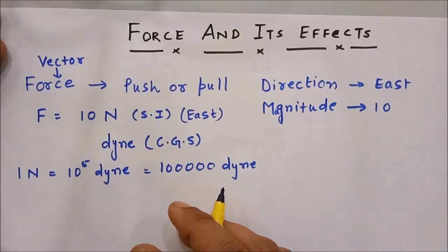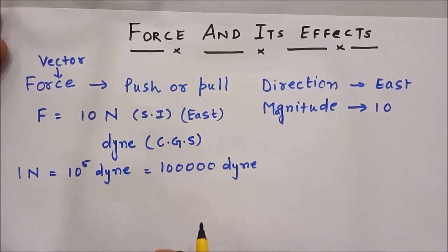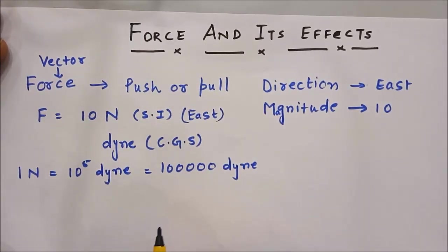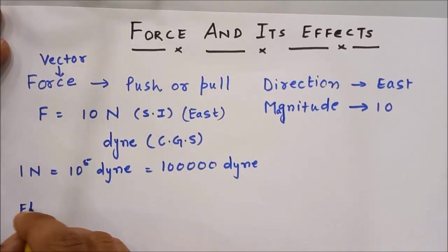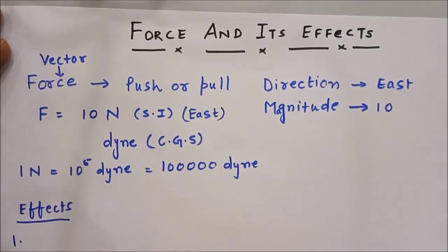Now let us understand about the effects of forces on a body. Number one, speed of the body. Suppose there is a car moving in this direction with some speed, say 5 meters per second.